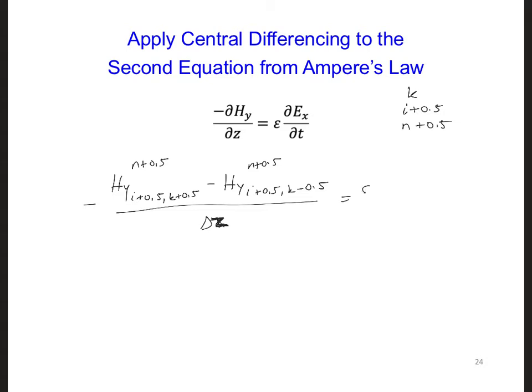And this is equal to epsilon times Ex at time step n plus 1 minus Ex at n. And this is at i plus 0.5, k plus 0.5, divided by delta t.